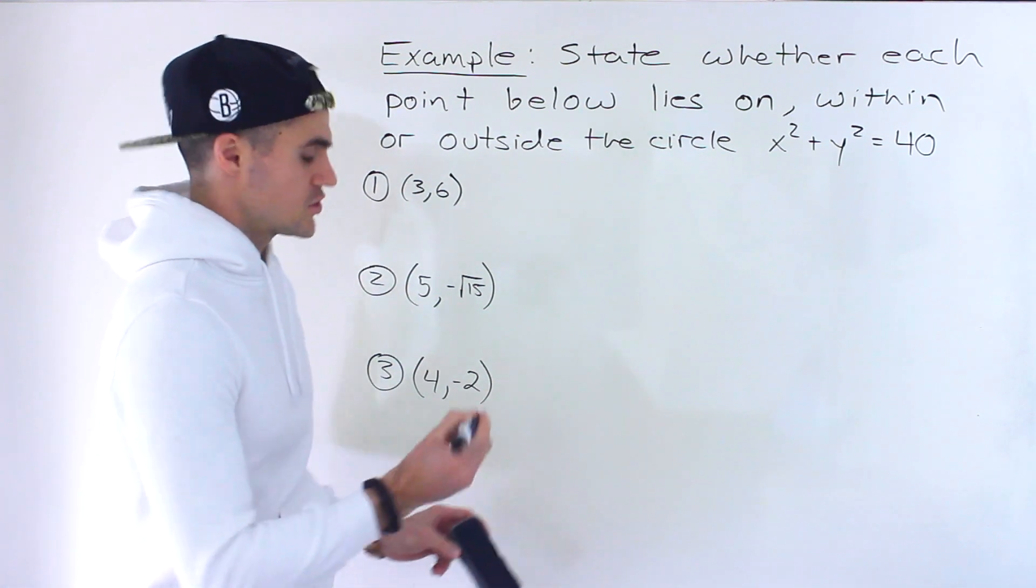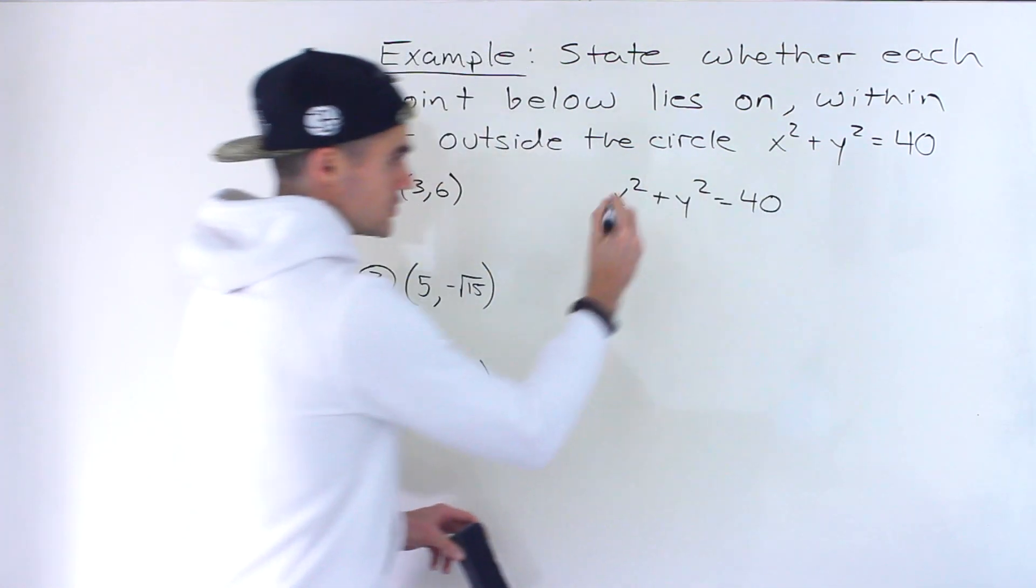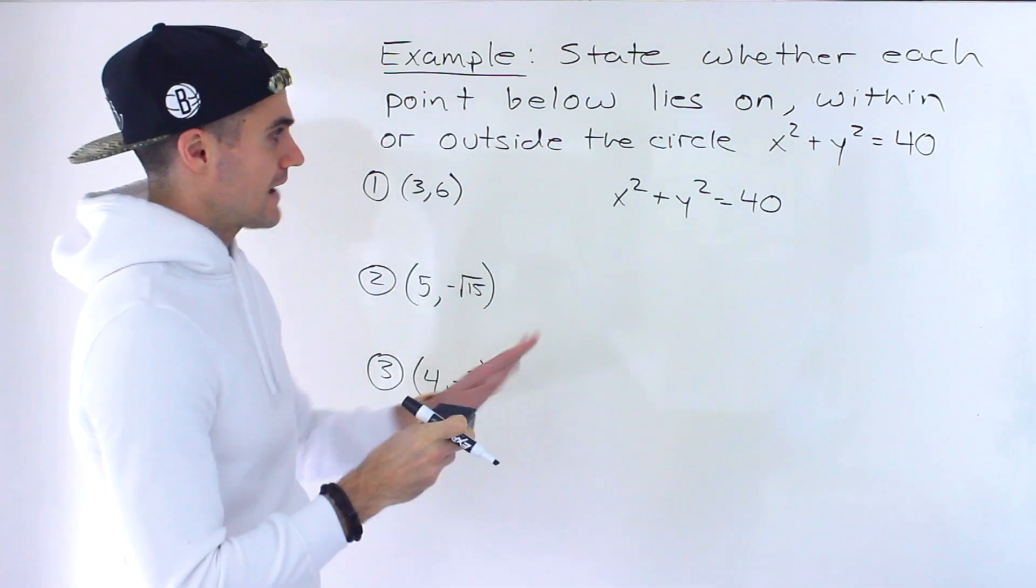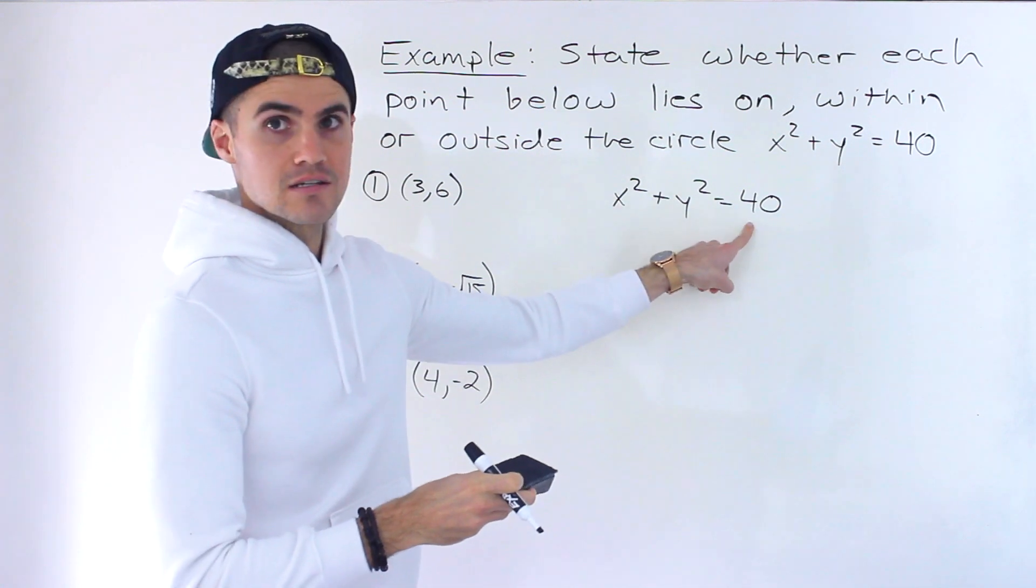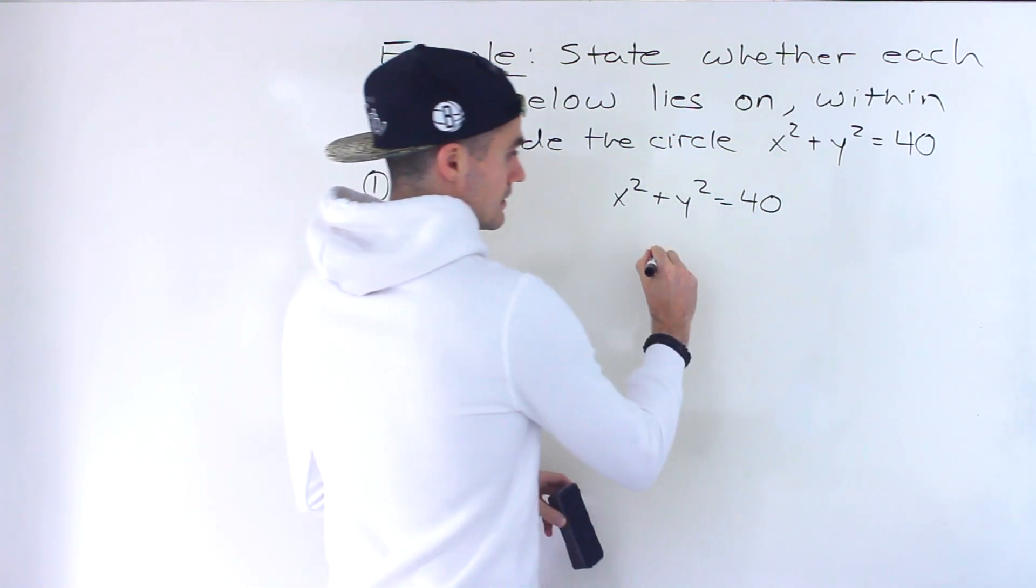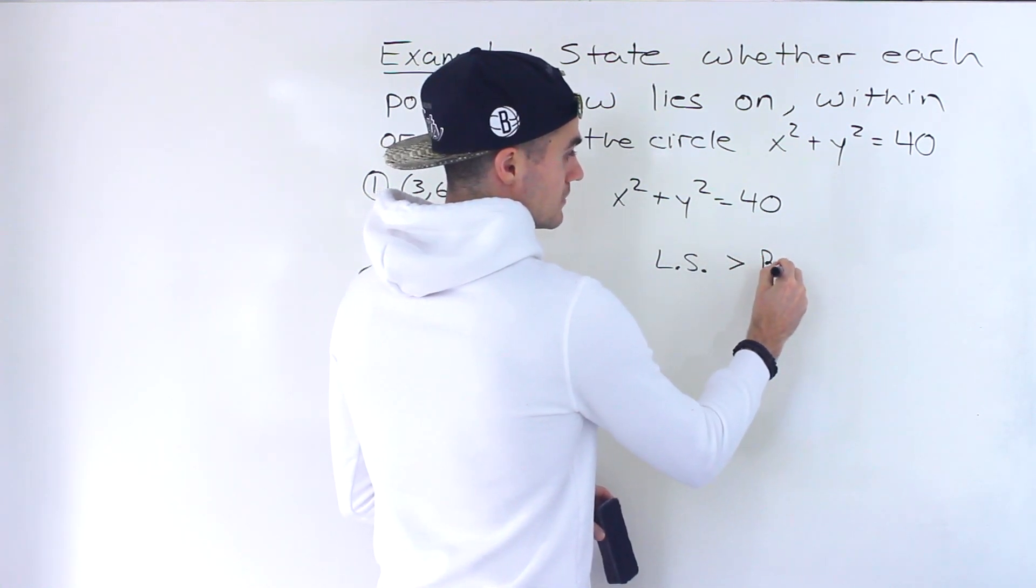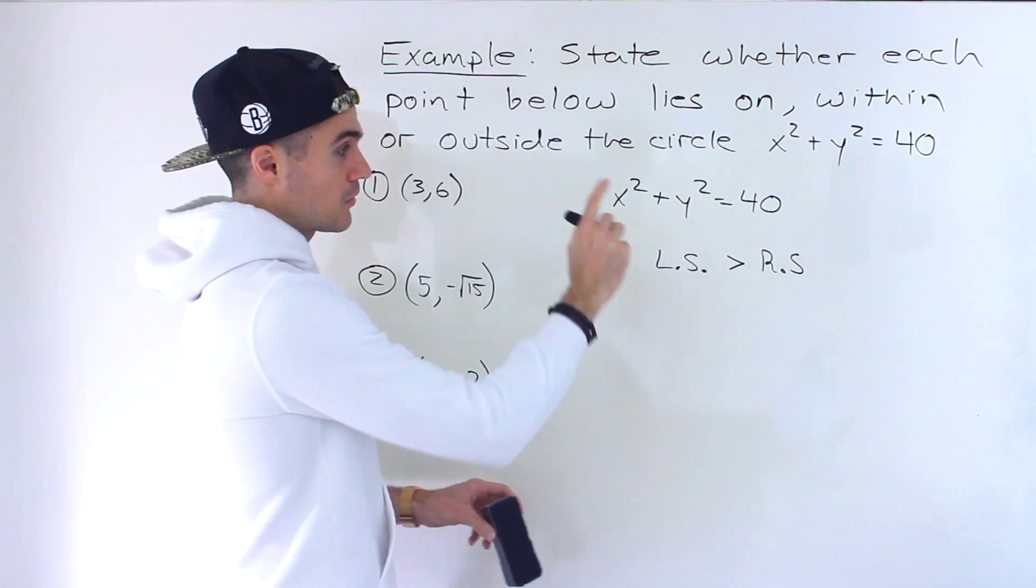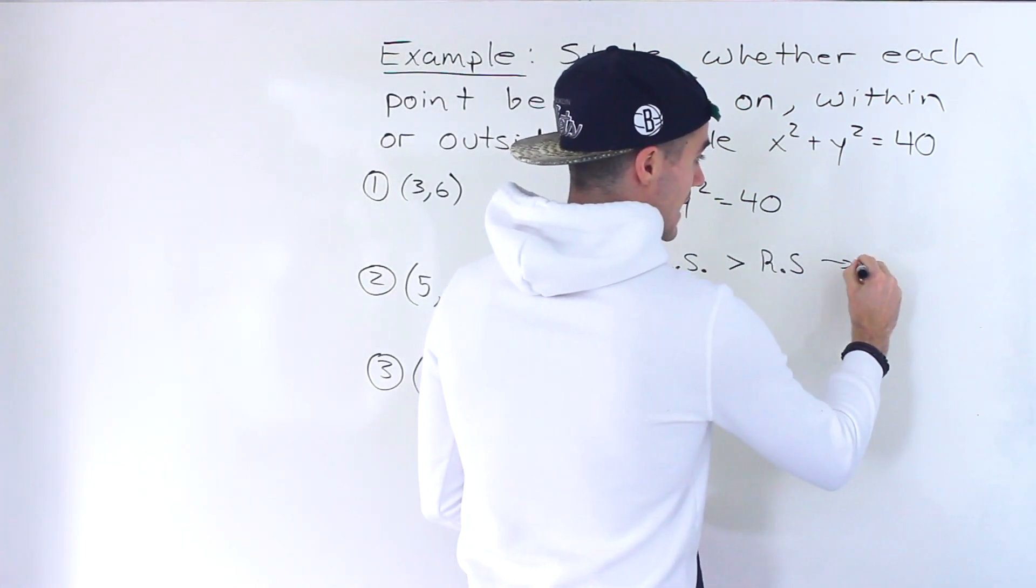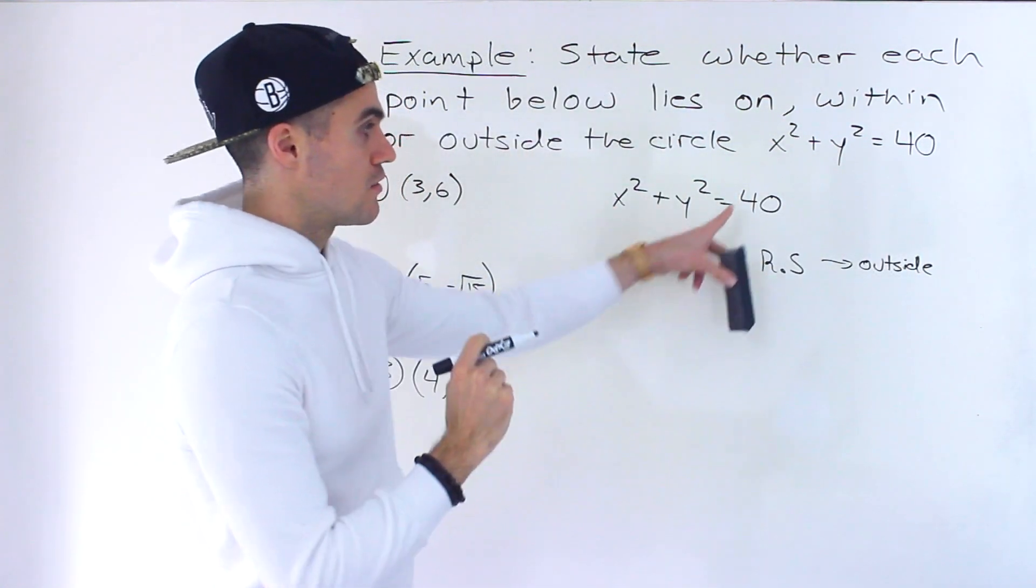With this kind of question what you want to do is use this equation of a circle by plugging in these points and seeing how the left side relates to the right side. If we plug in a point and the left side ends up being greater than the right side, or greater than this r squared—remember x squared plus y squared equals r squared—if this happens then it means that the point is outside of the circle.